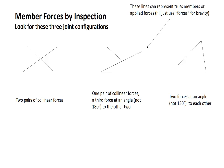The first diagram shows two pairs of collinear forces. The second diagram shows one pair of collinear forces and a third force off at an angle. And the third diagram shows two forces at an angle to each other, but not right in line with each other.